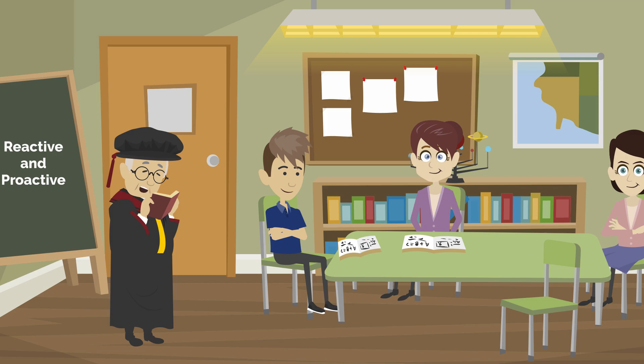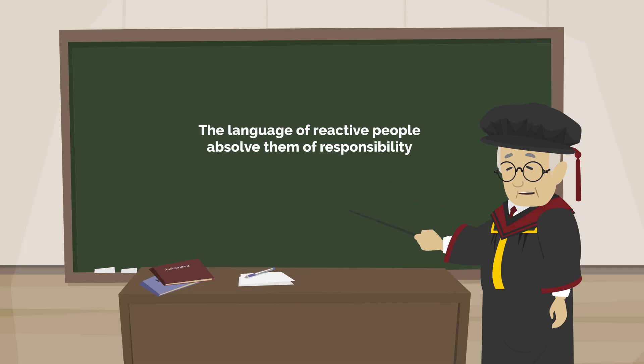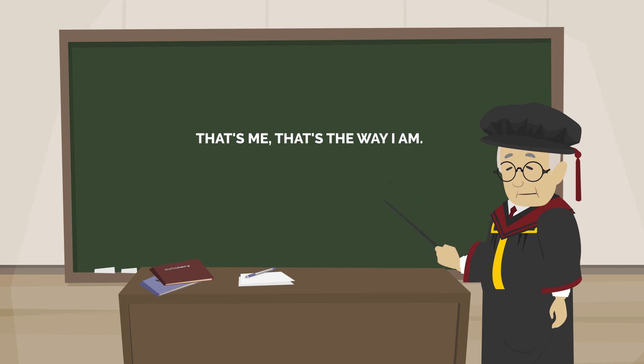Proactive people focus their efforts on their circle of influence. The language of reactive people absolves them of responsibility. For instance, 'he makes me mad' shows that I am not responsible. My emotional life is governed by something outside my control. 'That's me, that's the way I am' shows I am determined. There is nothing I can do about it.